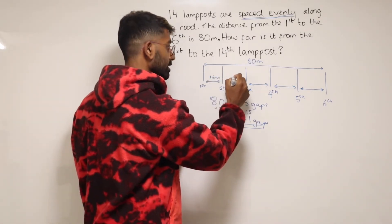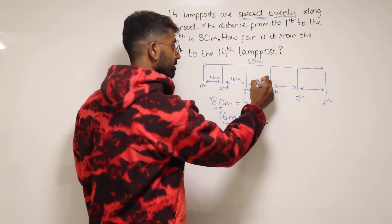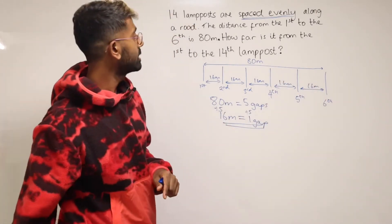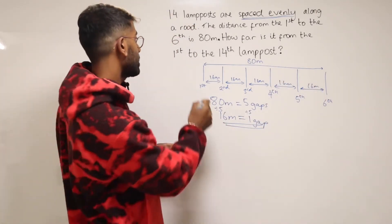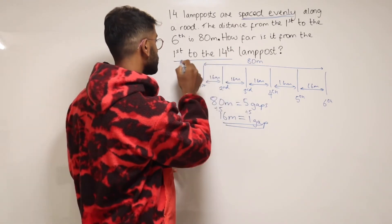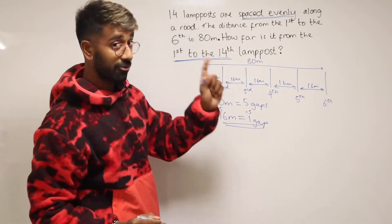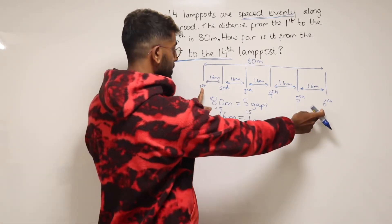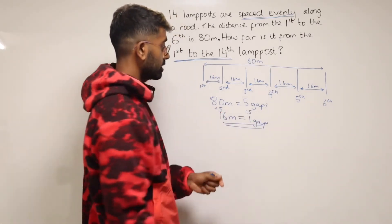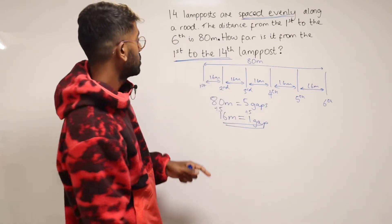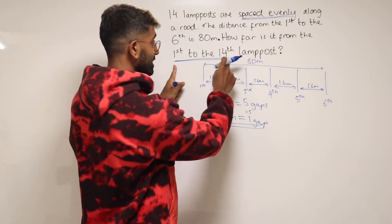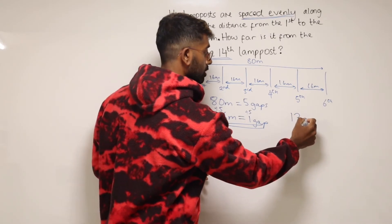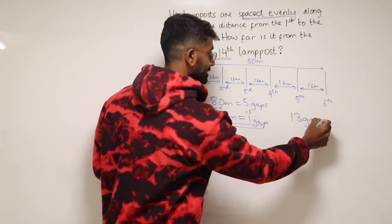So we can fill this in — 16 metres here, another 16, another 16, another 16, another 16. Our job was to find the total distance between the 1st and the 14th lampposts. Now, as we saw, between the 1st and the 6th lampposts there were only 5 gaps. So between the 1st and the 14th lampposts there will be a total of 13 gaps.